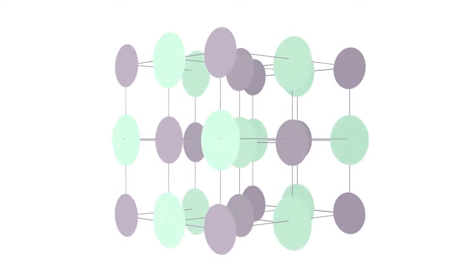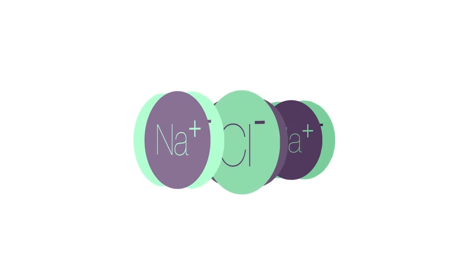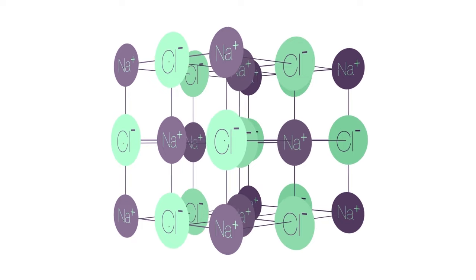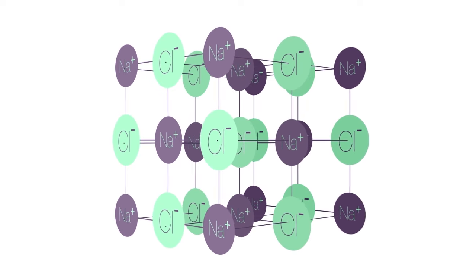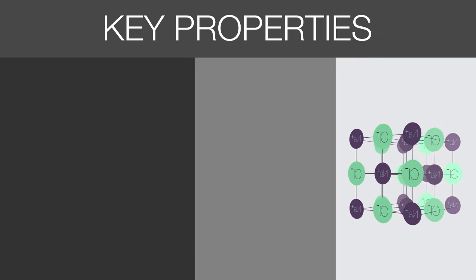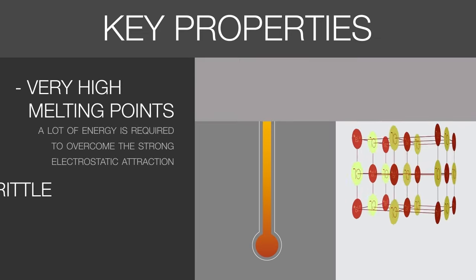In summary, ionic compounds exist as giant ionic lattices, not as single molecules. The giant ionic lattice is a regular repeating 3D pattern of alternating positive and negative ions. The electrostatic attractions holding the structure intact are very strong, and this accounts for the fact that ionic compounds have very high melting points and are brittle.